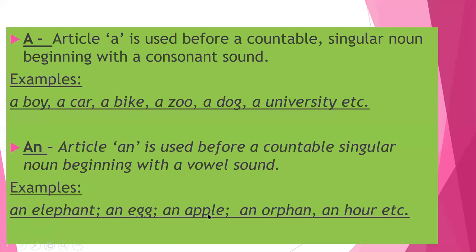Egg — same, A sound. Apple — A sound. Orphan — O sound. So these sounds are vowel sounds, and even the letters are also vowel. But when I say 'hour', the first letter is H. But H is silent here. When we pronounce it, 'hour', the sound coming is of A — that is the O/ow sound — which is a vowel sound. So we use 'an' with hour.